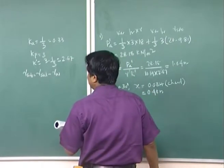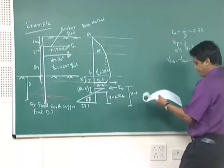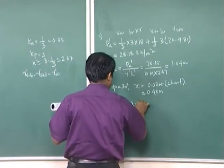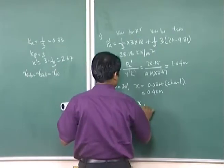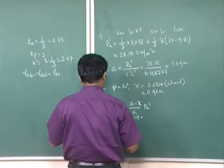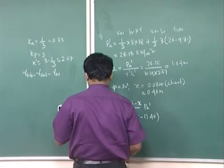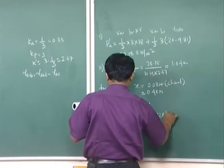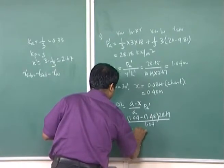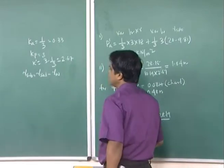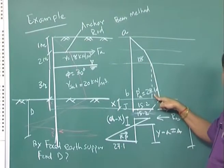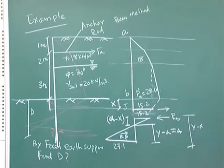Once x is obtained, find P' — the pressure at the point of contra flexure. P' equals [(A minus x) / A] × Pa', which equals [(1.04 minus 0.48) / 1.04] × 28.19, giving 15.2 kN/m². This matches the value shown in the pressure distribution diagram.